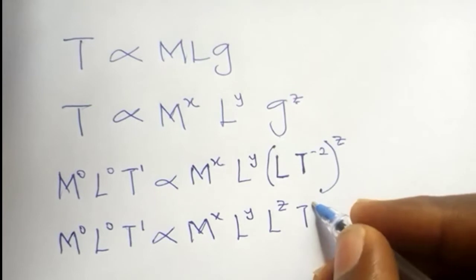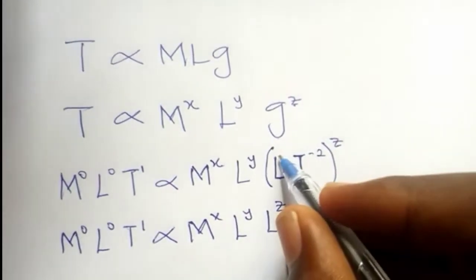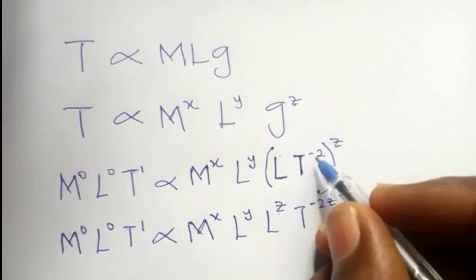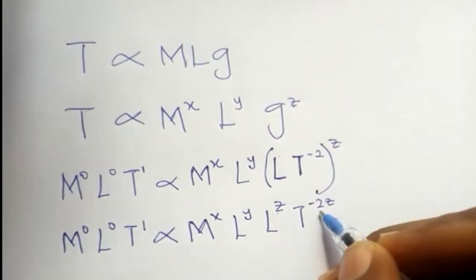Let's open the bracket. This z affects both L and T, so it becomes L raised to z times T raised to minus 2z. Remember indices: the power is 1, so 1 times z is z. The power is minus 2, minus 2 times z is minus 2z.